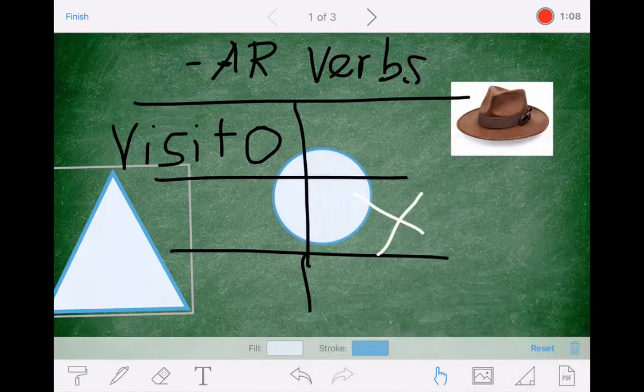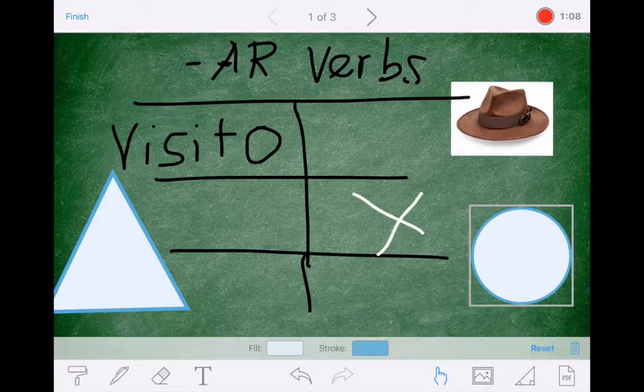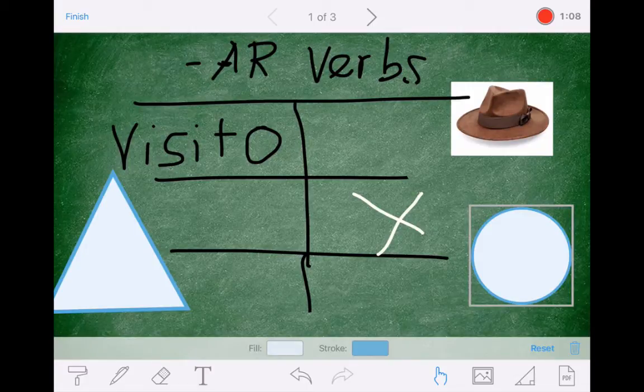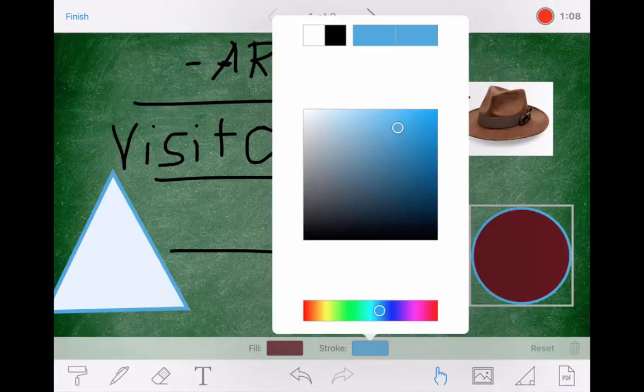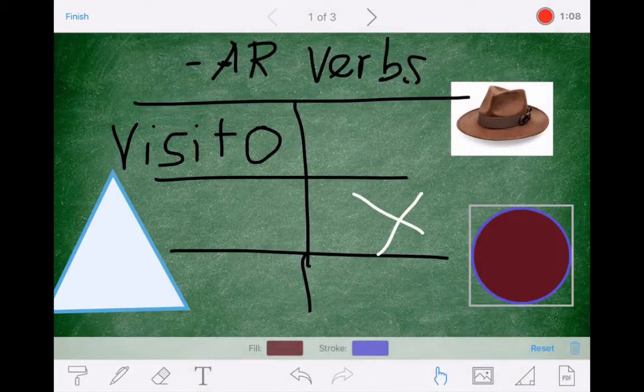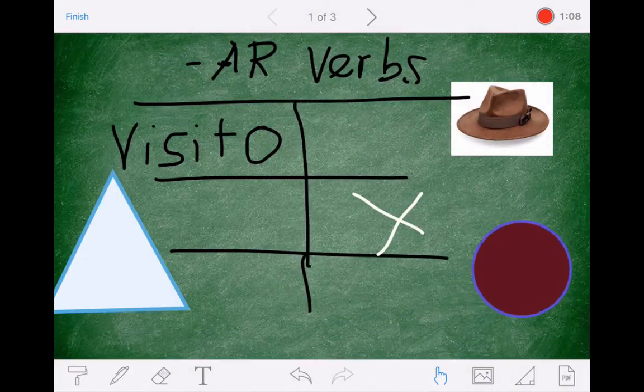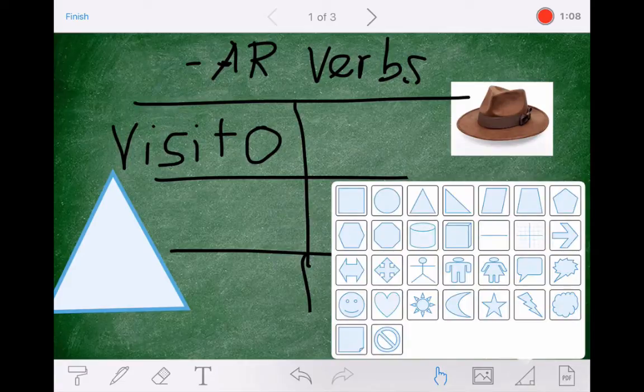I'm going to add a circle. Once you bring those in, if you tap on them, notice at the bottom of the app, it gives you the ability to change the color. So the fill color, I could change. I could change the stroke color. You can also reset it and you can also delete it. So that's a pretty good option to be able to add in those shapes.